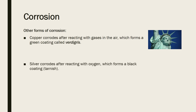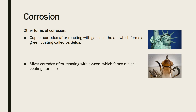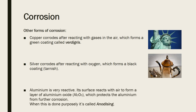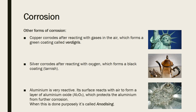Silver corrodes after reacting with oxygen to produce a black coating, and we call this process tarnishing. Aluminium is very reactive — its surface reacts with air to form a layer of aluminium oxide, which protects the aluminium from further corrosion. When this is done purposely it's called anodising, because it forms a really strong layer on top of the aluminium.